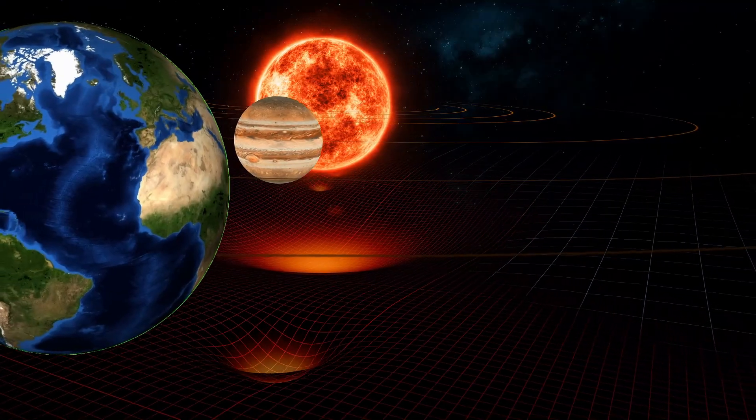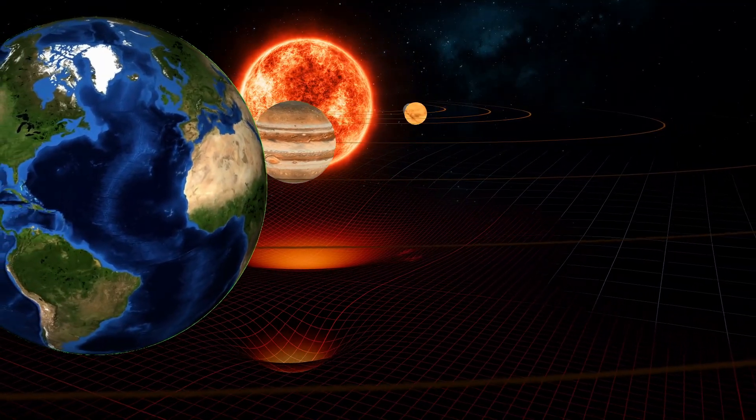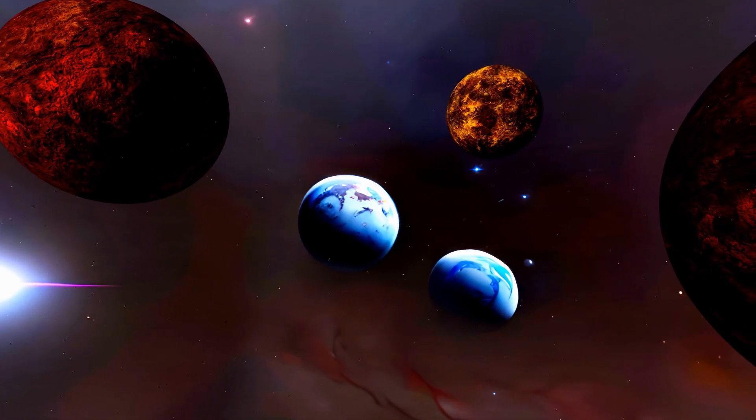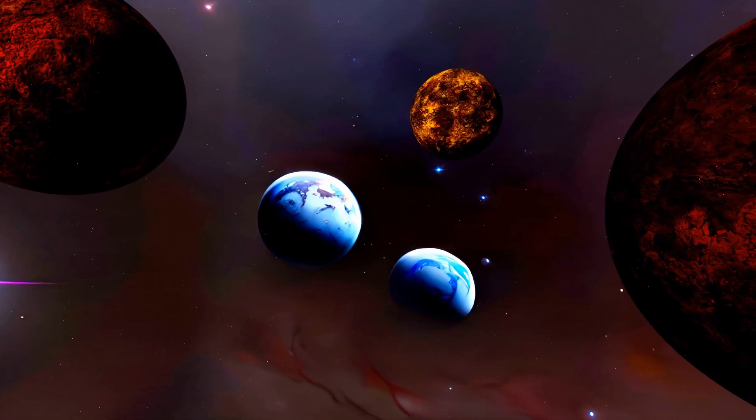The Earth, usually a speck compared to the sun, now stands larger and more prominent in the sky than this miniature sun. It's like flipping the whole universe upside down, and it makes you wonder how everything around us would change in such a topsy-turvy scenario.